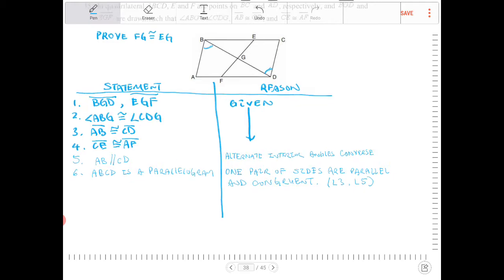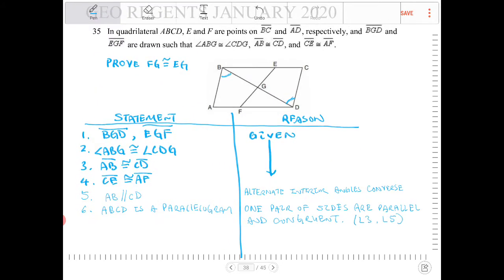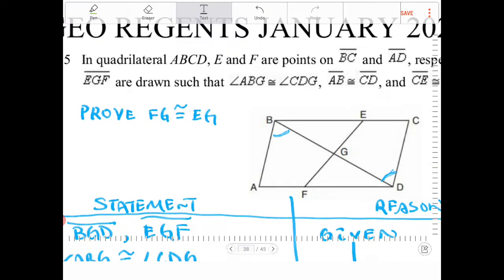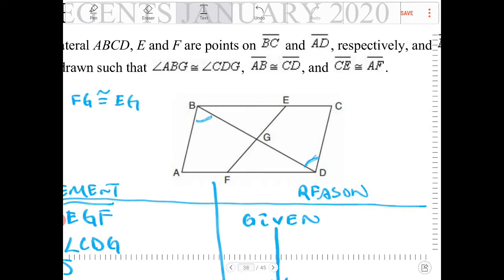So why is that important? Our goal is to show that FG is congruent to EG. These two segments over here. I also notice immediately that I have a triangle here and a triangle there. We probably will need to prove those two triangles are going to be congruent before we can say anything else about those two corresponding sides. So that's going to be the approach I'm going to take here.